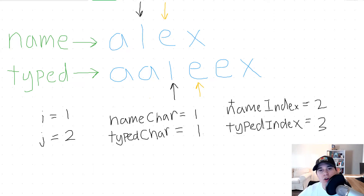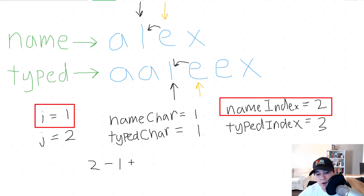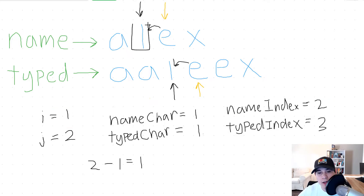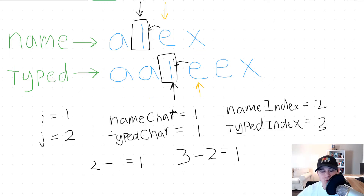Name index and typed index move directly in front of I and J. Name character and typed character are now both looking at L. Since they are the same, we can continue. Looking backwards from name index to I, the characters are not the same, so we don't increase name index. Likewise for typed index. We compute name index minus I: two minus one equals one — the single L. Typed index minus J: three minus two equals one — also the single L. Since we have equal L's, we're fine to continue.